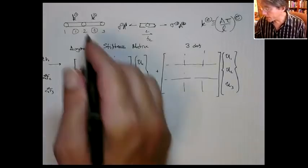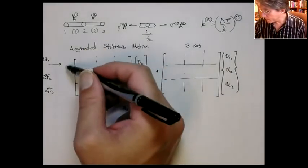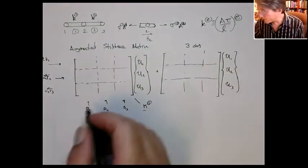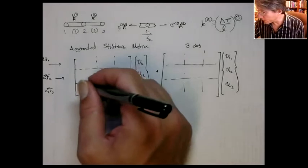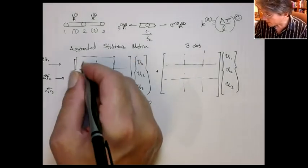So the first element relates the forces at nodes 1 and 2 to the degrees of freedom at nodes 1 and 2. So it sits here. So in fact, you get the k1, k1, minus k1, minus k1,